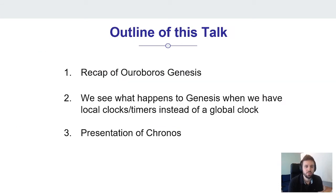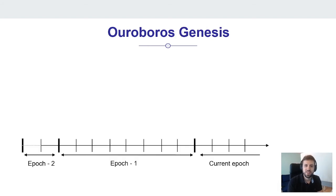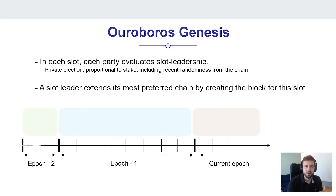This brings us to a natural outline of the talk. First we recap Ouroboros Genesis to see how it works and understand what happens when we don't have access to a global clock but only duration timers — what can go wrong and what has to be fixed. Then we present KRONOS, our clock synchronizer, which is simultaneously a blockchain protocol. In Genesis, time is divided into discrete units called slots, and a certain number of slots is called an epoch. In each slot, each party evaluates a private slot leadership lottery, elected proportional to stake and seeded by randomness that comes from the chain itself.